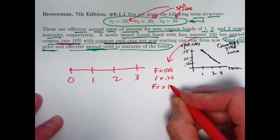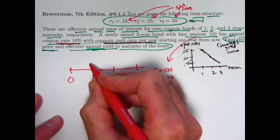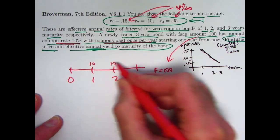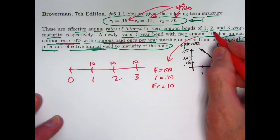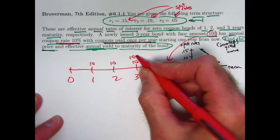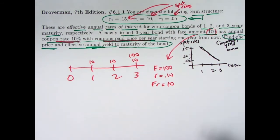And the coupon amount is then F times R. 100 times 0.10 is 10. So you get coupon payments at time one, time two, and time three, but then you also get the redemption amount, which is the same as the face amount here implicitly of 100 at time three. Okay? So that's the kind of returns that you get.